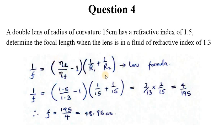1 over F equals NL, the refractive index of the lens material, over the refractive index of the fluid environment, minus 1, multiplied by the sum of 1 over r1 plus 1 over r2. Now that we're talking about a double lens, r1 and r2 take the value 15 because they are equal.